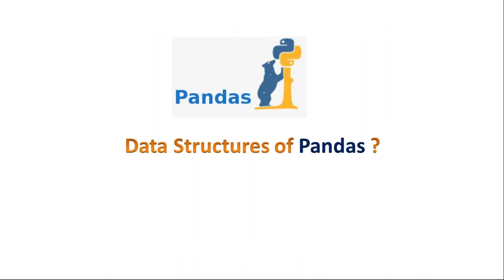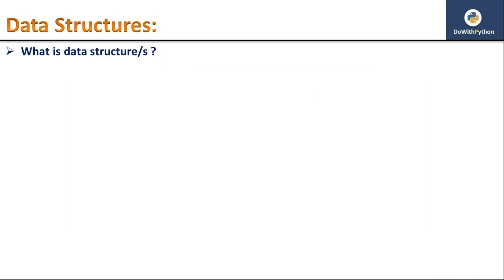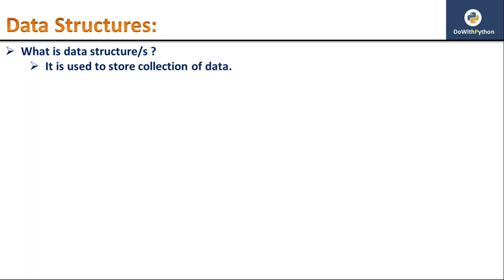Before going to see data structures of Pandas, first I want to explain what a data structure is. From the basics of Python, you might know concepts like list, tuple, dictionaries, and sets. Those are basically data structures — basic data structures in Python. So why are we using all those things: list, tuple, dictionary, and sets?